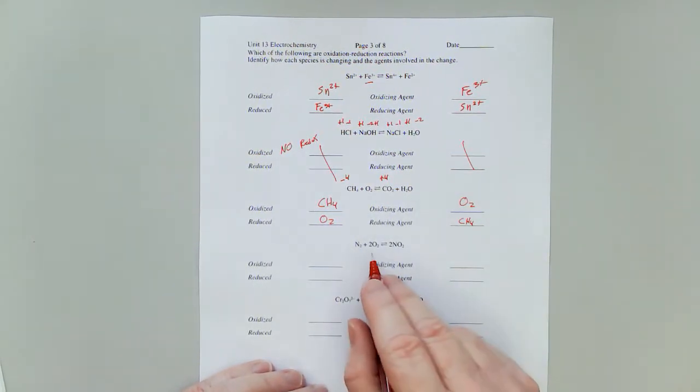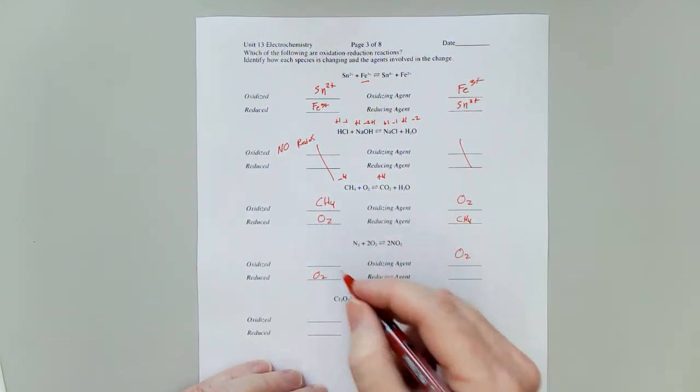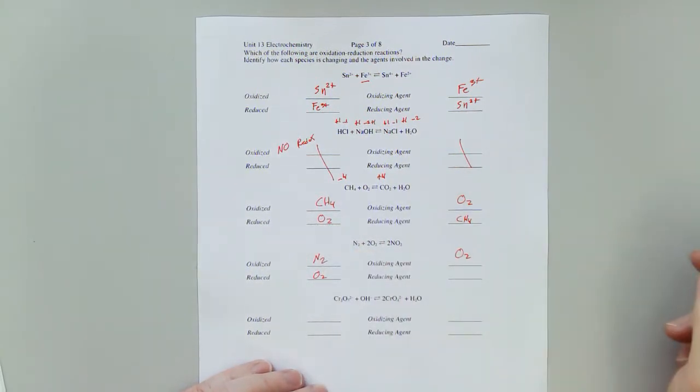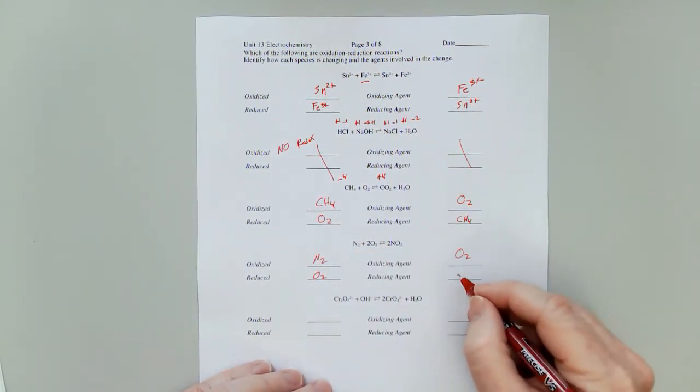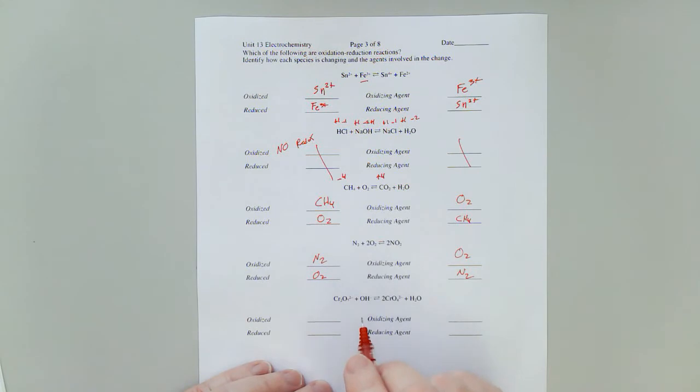Oh, you know what? I can spot it right away. I've got O2 here. I know O2 is going to be the oxidizing agent. So it must be reduced. So the N2 must be oxidized, which leaves this as N2. Let's see if that's true. N2 is going from a zero to a plus four. Yep. That's oxidized.